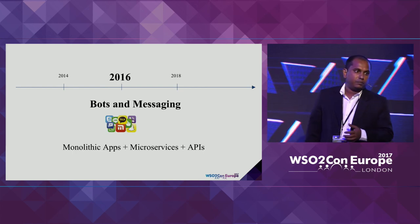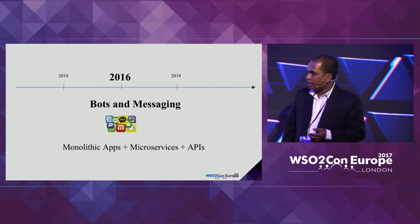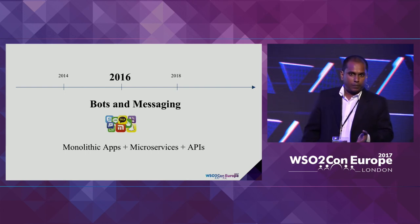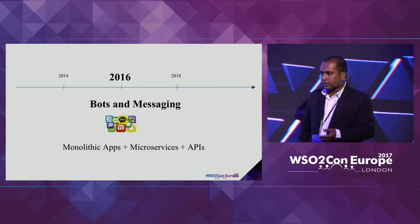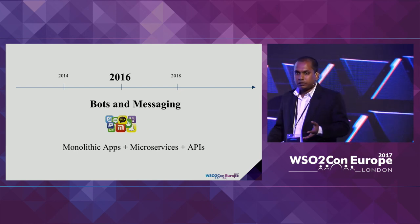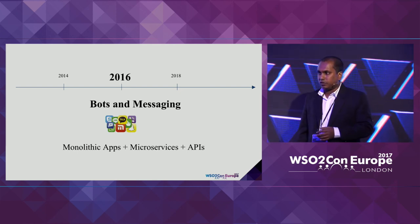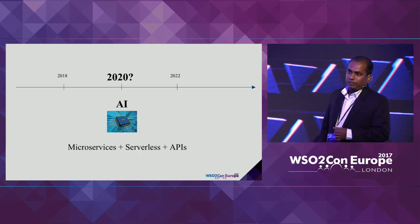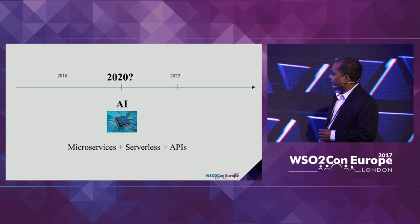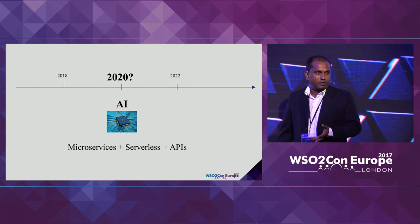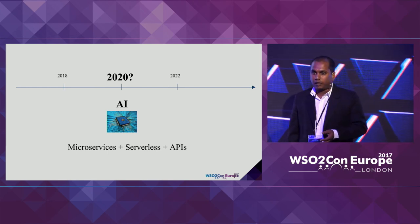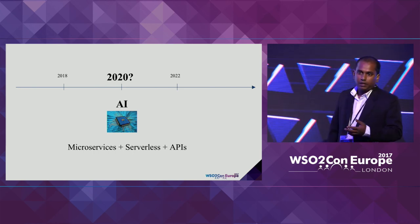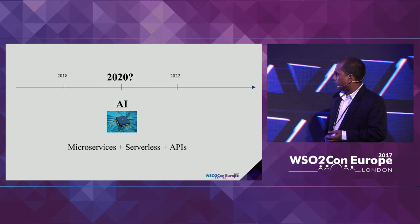In 2016, messaging and bots became very popular. In the application domain we can see monolithic applications, a lot of microservice applications, and a strong API community in software development. What's in 2020? Maybe AI. In the application domain, between microservices or framework architecture, the API services will be a key part of software development.